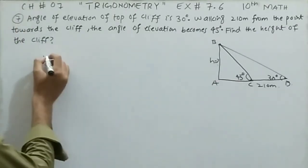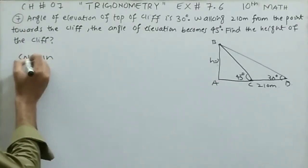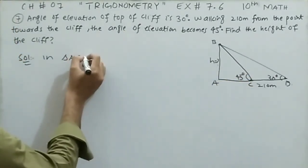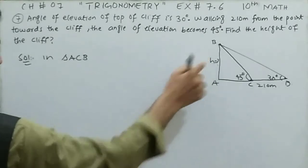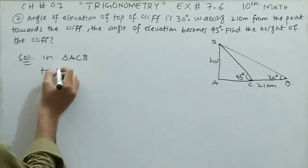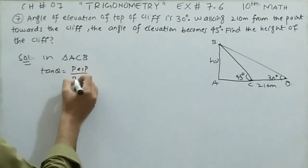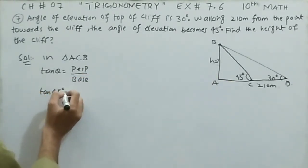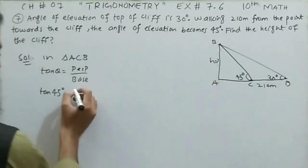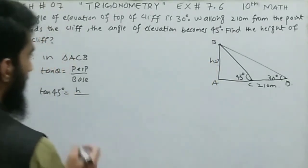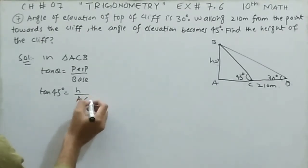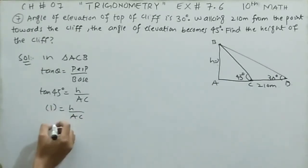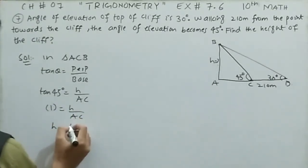In triangle ACB, the angle at C is 45 degrees. Using tangent theta equals perpendicular divided by base: tangent 45 degrees equals H divided by AC. Tangent 45 equals 1, so H equals AC. Therefore the height AB equals AC.